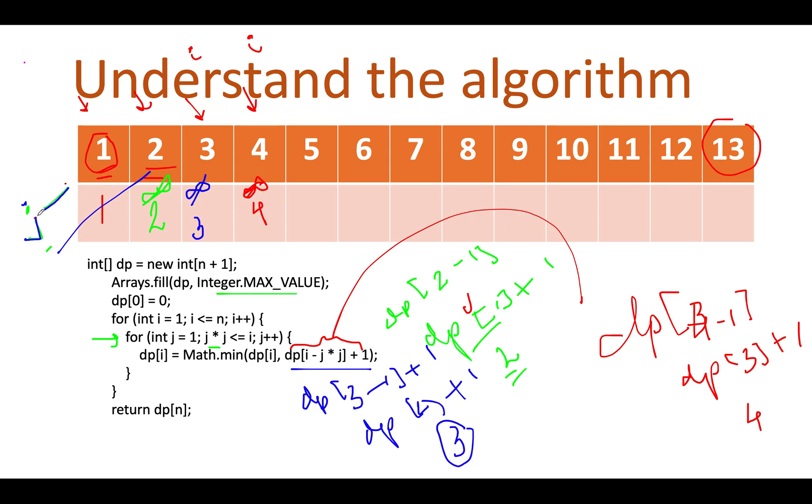Let's continue the process. j now points to two. j square is four. Four is less than equal to four. I am talking about this particular condition. It still holds true.